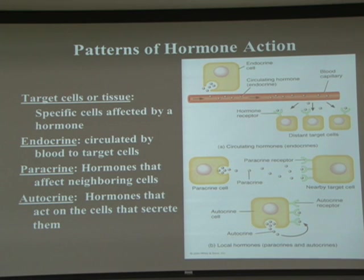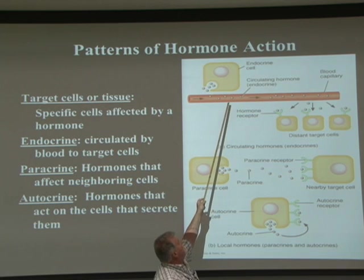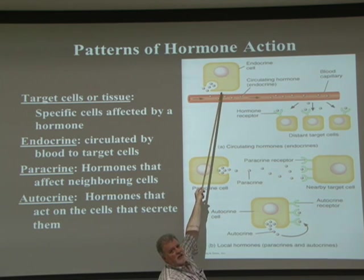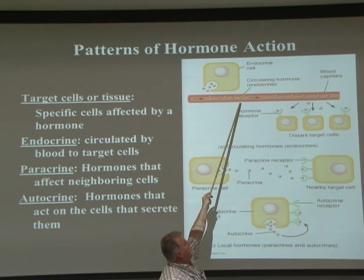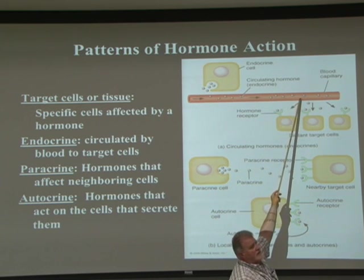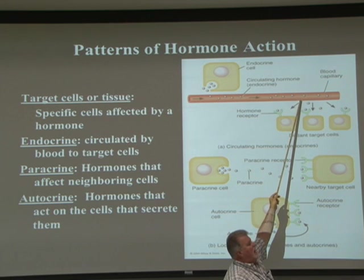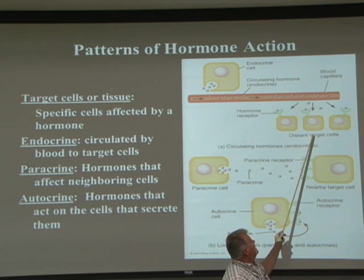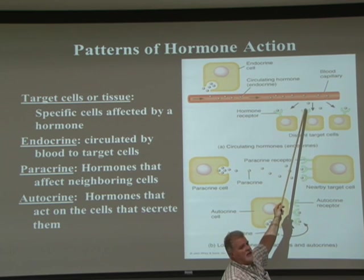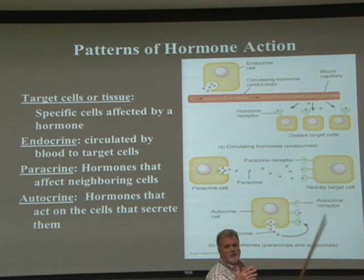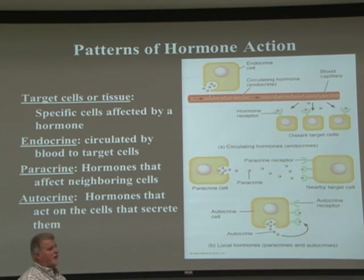An endocrine gland has cells that produce a hormone. The hormone is circulated in the blood, exits at capillary beds, and reaches target cells. Target cells must have a unique receptor to bind the hormone and produce an effect. That's the pattern of endocrine hormones.